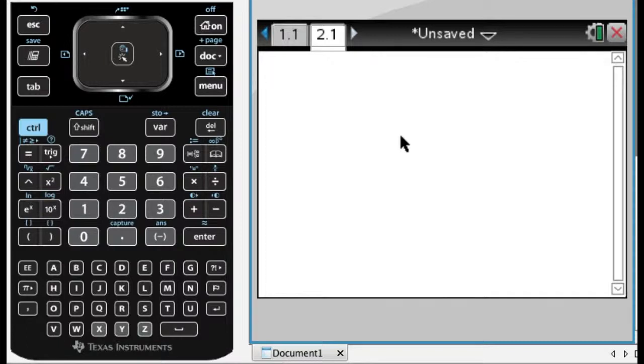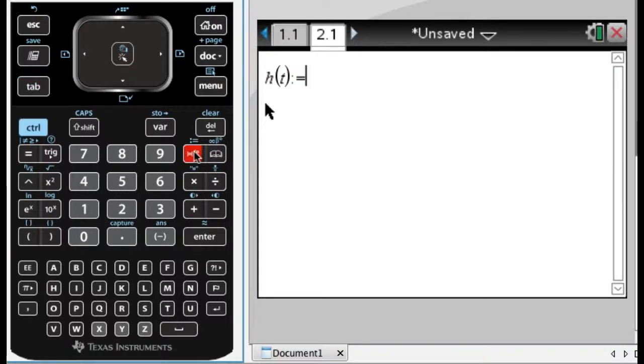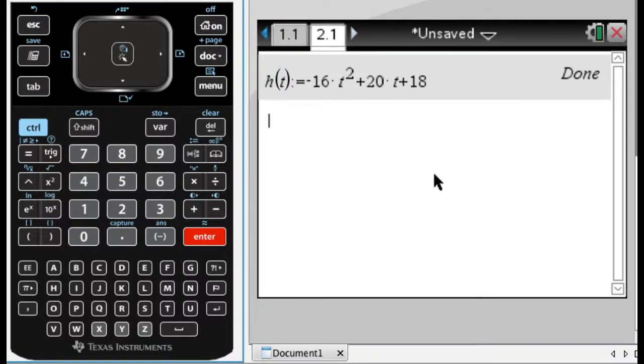So here I'm going to define a function but not a function of x, a function of t. So I'm going to do h of t and then colon equals, let's say, negative 16 t squared plus 20 t plus 18 for whatever reason. And then once I've done that I can now evaluate it either by typing h of, let's do h of 4. I can press the var key, get h and 4.